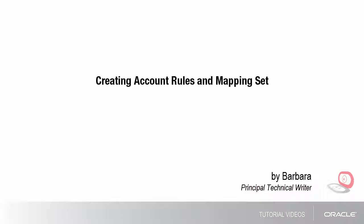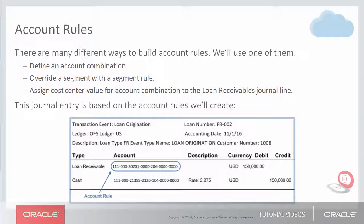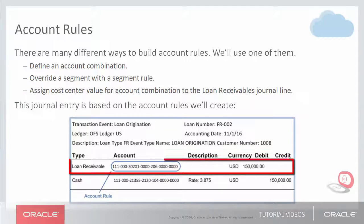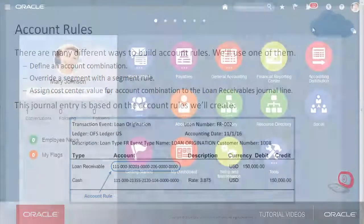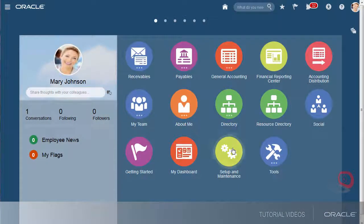Mapping set rules are used to derive the cost center value for the account combination and its corresponding account rules. There are many different ways to build the account rules. In this video, we'll use one of them. Here, we define an account combination and then override a segment with a segment rule on this full account combination. I'll assign the cost center value for the account combination to the loan receivables journal line. The value is dependent on whether the loan type is adjustable or fixed rate. A journal entry is created based on the account rule I'll create. Let's begin by navigating to the setup and maintenance work area.